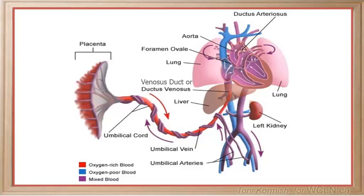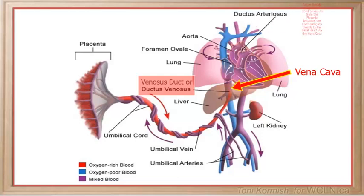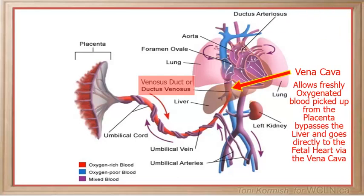This brings us to the fourth unique structure in fetal circulation: the ductus venosus. The ductus venosus is located between the umbilical vein and the vena cava, and allows the freshly oxygenated, clean blood picked up from the placenta to bypass the liver and go directly to the fetal heart via the vena cava.